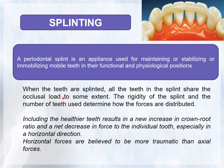When teeth are splinted, all teeth in the splint share the occlusal load. The rigidity of the splint and the number of teeth used determine how forces are distributed. Including healthier teeth increases the crown-root ratio and results in a net decrease in force to the individual tooth, especially in a coronal direction, since horizontal forces are believed to be more traumatic than axial forces.